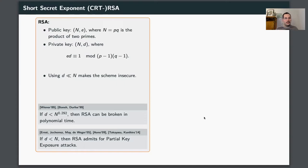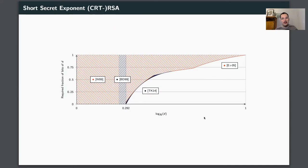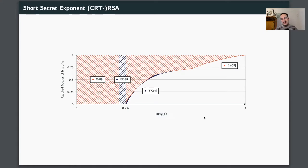What are partial key exposure attacks? This means that whenever you use too small d, then you can break RSA in polynomial time, provided that you know a fraction of the bits of d. This graph here explains these results best. On the horizontal axis, we see how large d is in comparison to N, and on the vertical axis, we see how large a fraction of bits of d you need to break RSA in polynomial time.